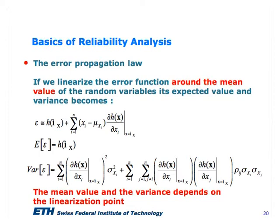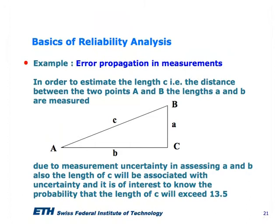The expected value and variance of the error are easy to assess. However, the crucial point is that when we linearize a function, we must choose where to linearize it. Here we linearize at the mean value — this is simply a choice, and may not be the best choice. The result of the expected value and variance will depend on this choice. Using the classical error propagation law, the linearization is made at the point corresponding to the mean values of the random variables.